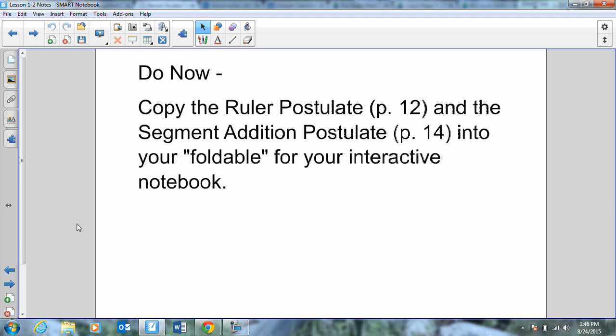Alright, so hopefully we've got those postulates copied into our notes. In geometry, a rule that's accepted without proof is called an axiom or what? A postulate, okay? So those are just things that we're going to have to accept. They're just a given.